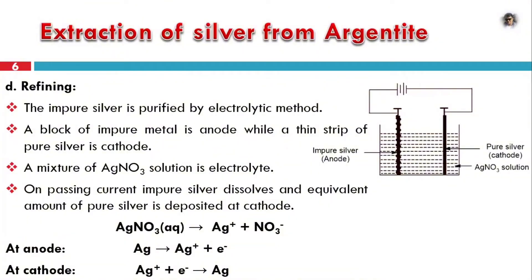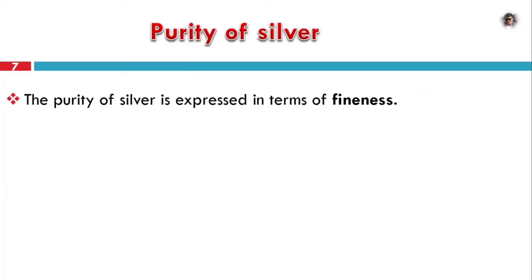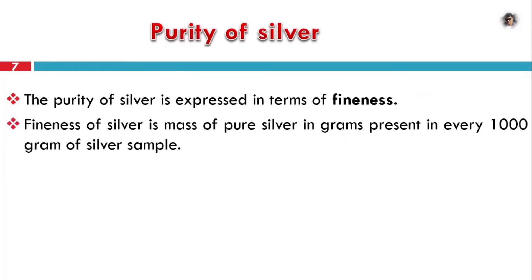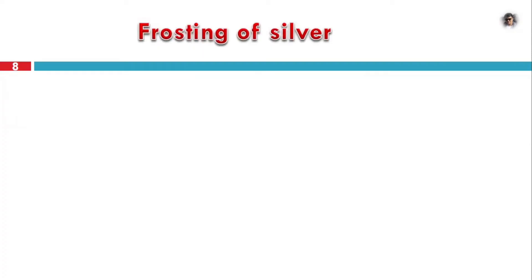Next, we discuss the purity of silver. The fineness of silver is the mass of silver in grams present in every 1000 grams of the silver alloy. For example, 900 fine silver means that out of 1000 grams, 900 grams is pure silver. This means we have a string or article of silver with that level of purity.